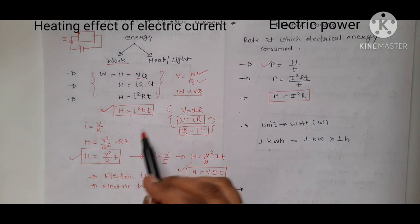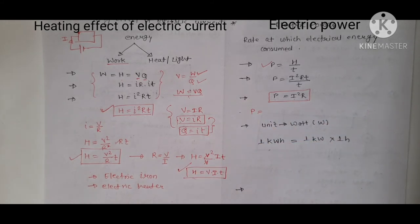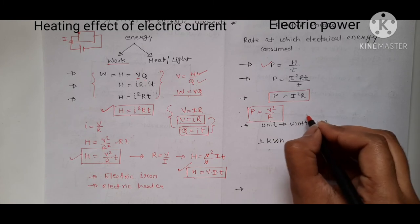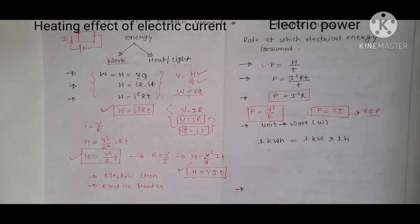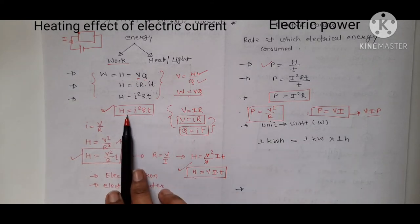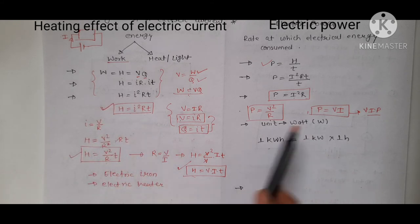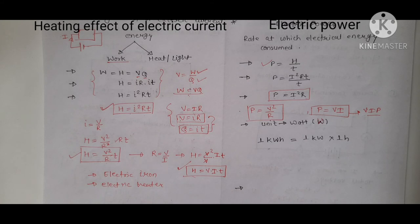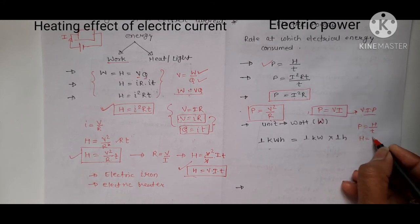We can generate more formulas for electric power. Substituting I = V/R gives P = V²/R. The third formula uses P = VI, which you can remember as a direct formula. The unit of electric power is the Watt, represented by capital W. Electric energy H has units of Joules, while power is measured in Watts. If power is in kilowatts and time in hours, then energy is in kilowatt-hours.